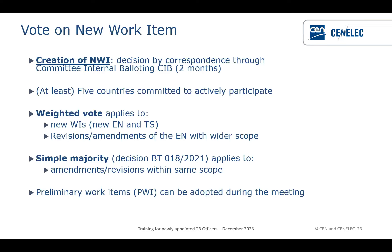The second criterion is that you need at least five members willing to actively participate in the work. If one of these two conditions is not met, in theory the work item is not approved. However, there is an important BT decision about derogation of the five members rule — if at the end of the ballot you have a positive vote but fewer than five members, the technical committee can take a TC decision with justification to request the technical board for creation of this work item even without the five members rule.